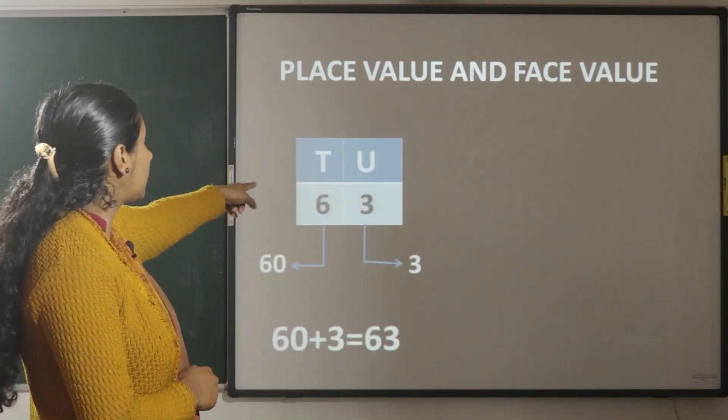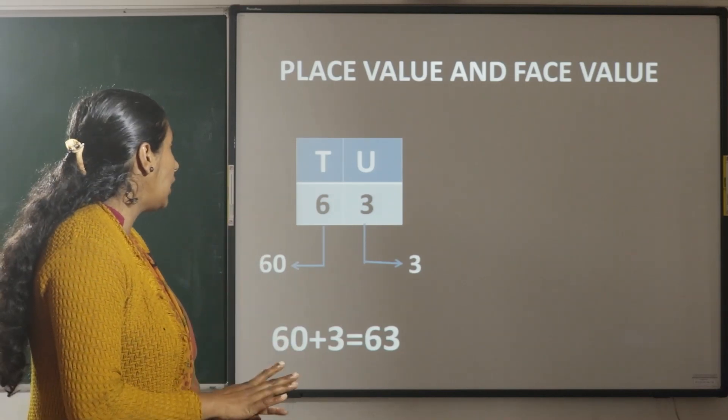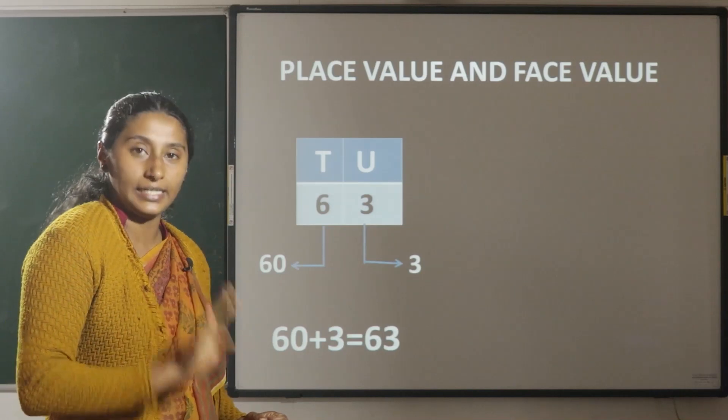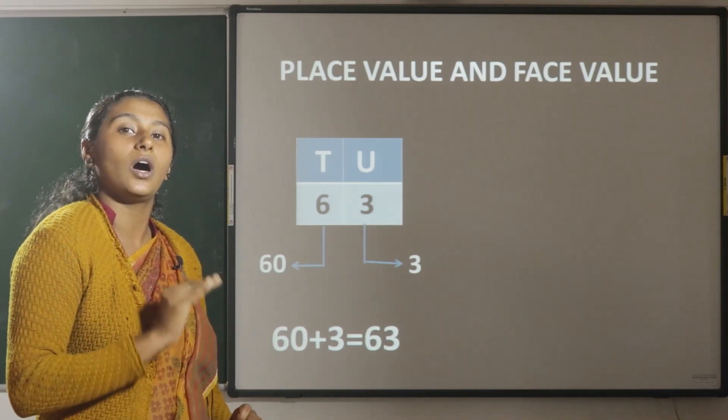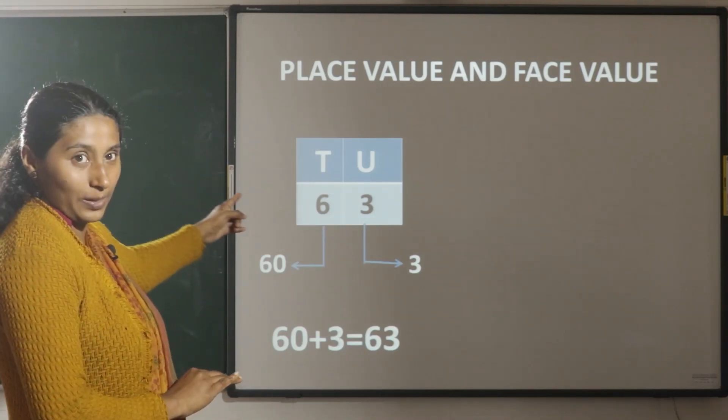63. Here, 3 is in unit place. The place value of 3 is 3 and the face value of 3 is 3. And 6 is in tens place.